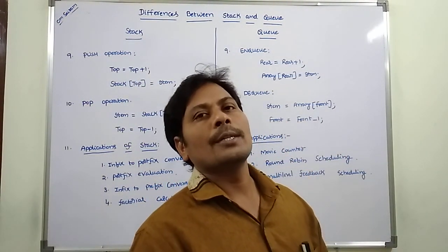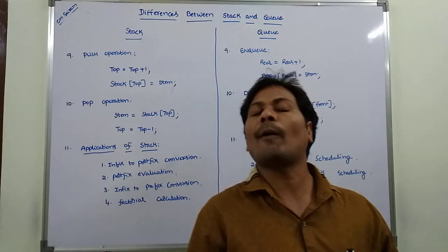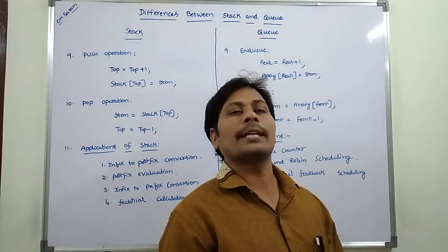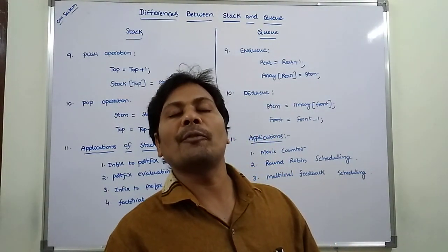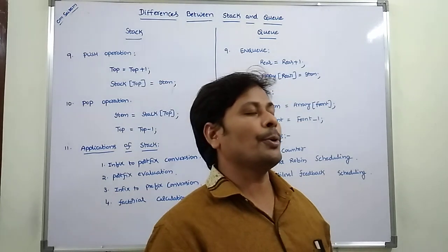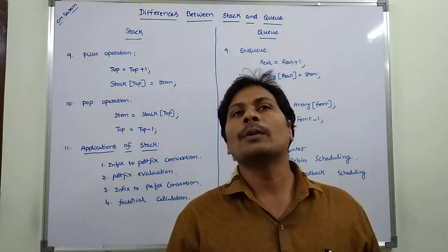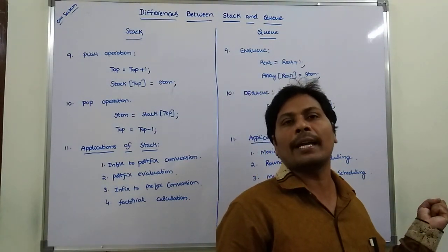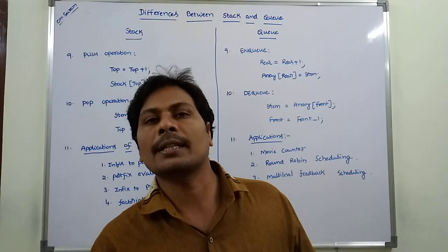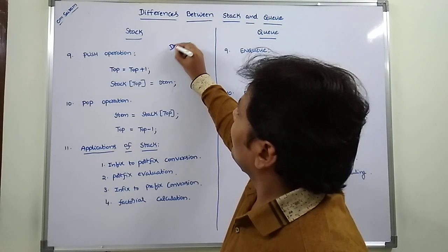What are the applications of queue? Round robin scheduling is one of the applications in operating systems. Thank you for watching this video. If you like this video, please subscribe to my channel. Thank you.